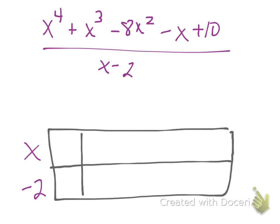To start off, we always start with our first term in this box here. So I have x to the 4th. I need to figure out x times what number gives me x to the 4th.